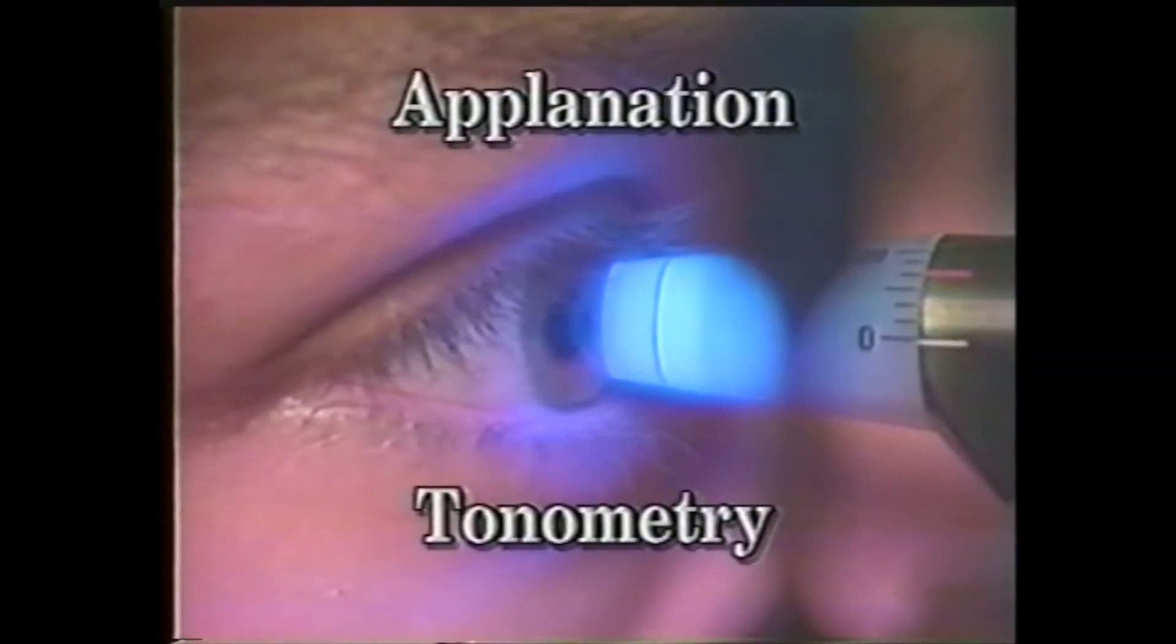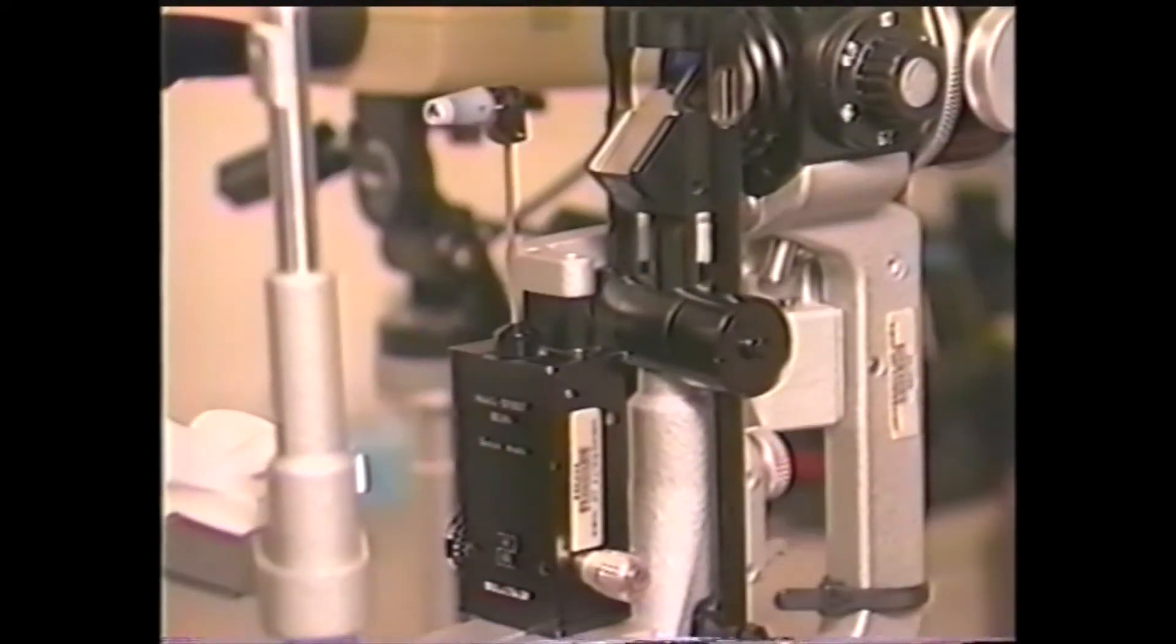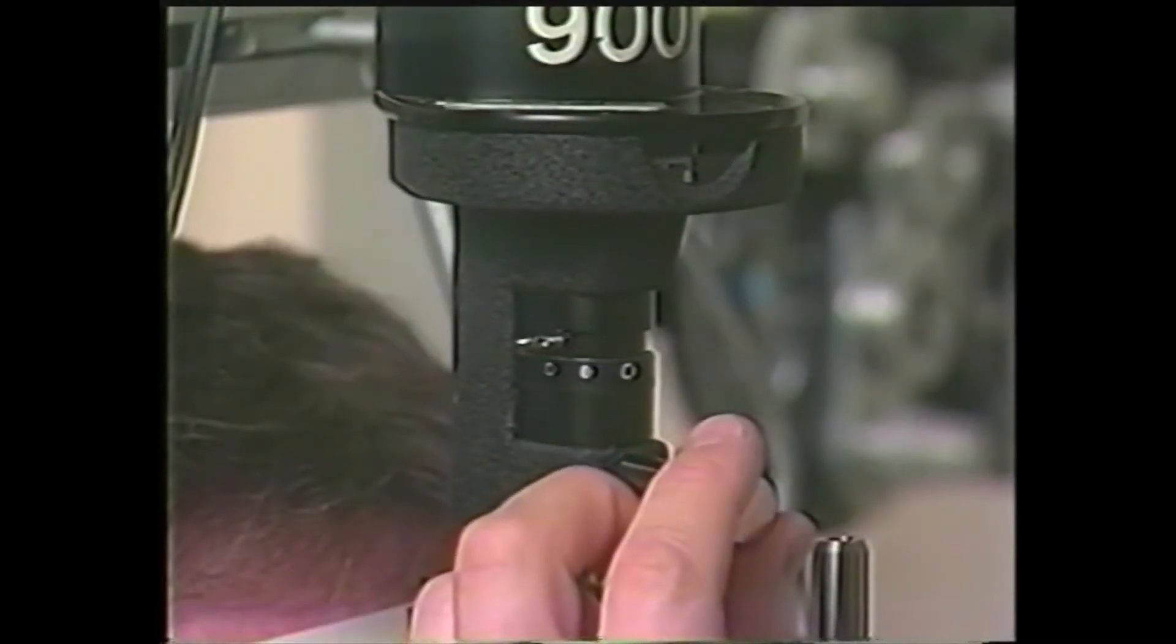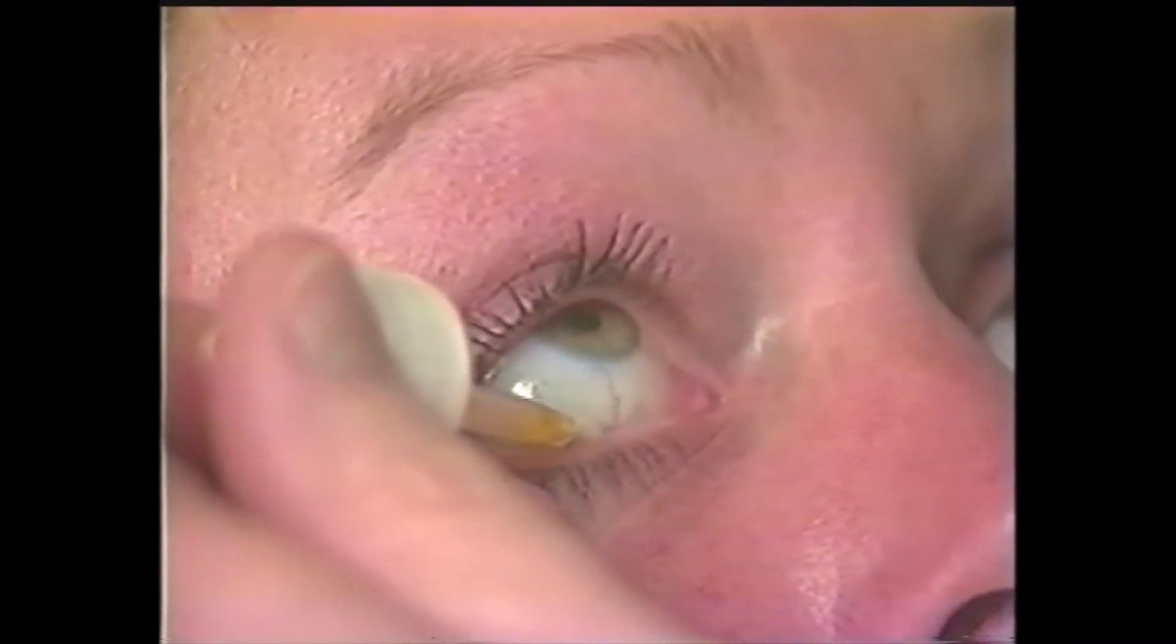Applanation tonometry should be performed after the anterior segment examination. Place the tonometer in position, insert the blue filter in the slit beam path, anesthetize the eyes, and instill fluorescein.